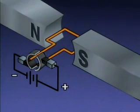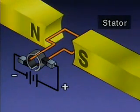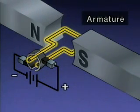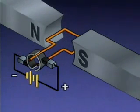This is an illustration of a DC motor. In this simplified example, the stator consists of two permanent magnets. The rotating part, which is shown as a loop of wire, is called the armature. The armature is connected to a source of DC power.